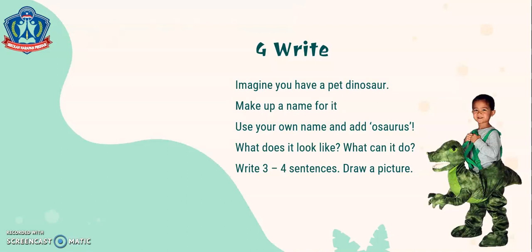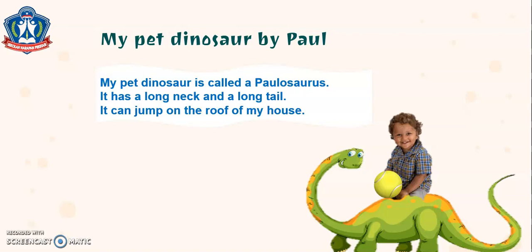For our fourth activity, it's writing again, children. Imagine you have a pet dinosaur. Make up a name for it — use your own name and add '-osaurus.' What does it look like? What can it do? Write three to four sentences, then draw a picture. Here is an example from our book: 'My Pet Dinosaur by Paul. My pet dinosaur is called Apollosaurus. It has a long neck and a long tail. It can jump on the roof of my house.' Take your time to write your own piece about your pet dinosaur — I'm so excited to hear your dinosaur names!